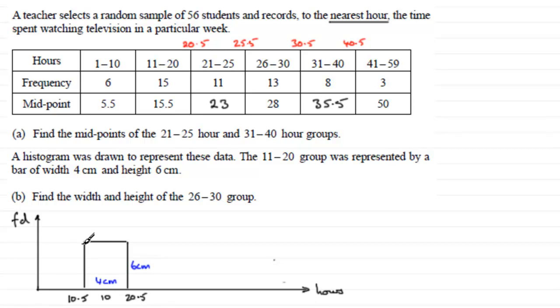And that height is equivalent to the frequency density, this value here. And how do we work out what frequency density is? Well, frequency density, FD, would be the frequency divided by the class width. Now the frequency for this was 15. And the class width we see is 10 units. So 15 divided by 10, which is 1.5. So this value here is 1.5. So the height, which corresponds to the 6cm, is 1.5 units.